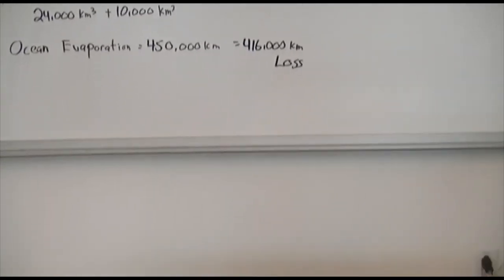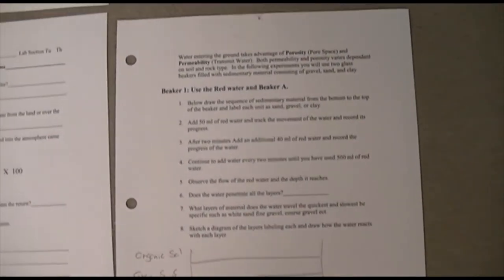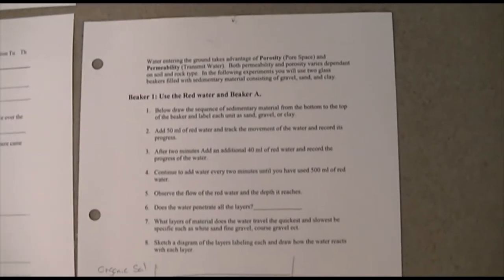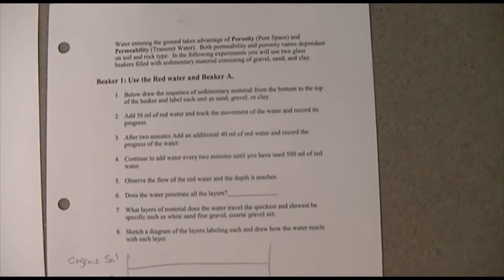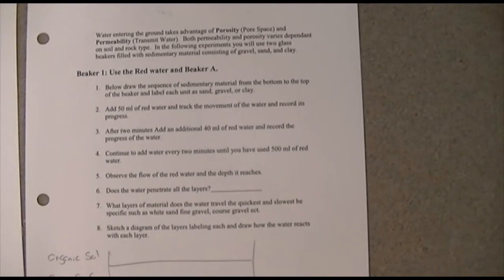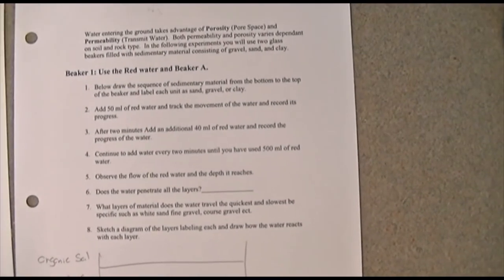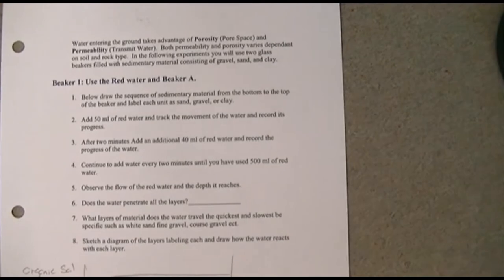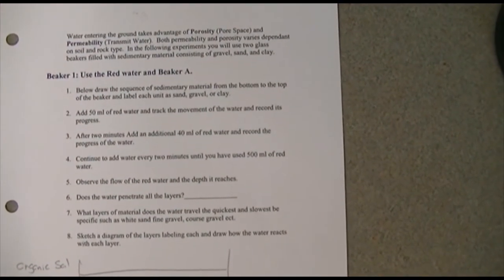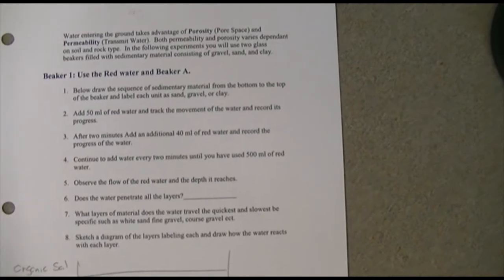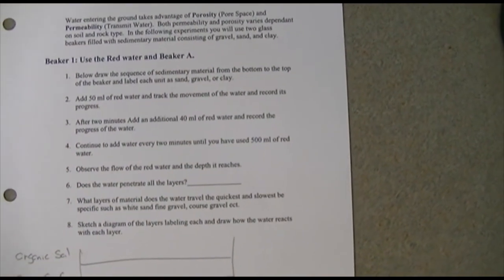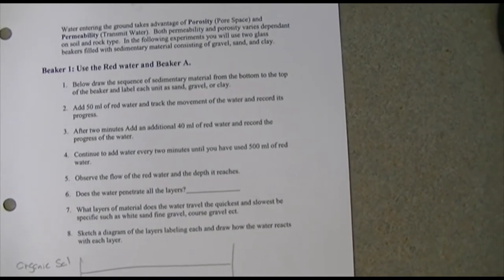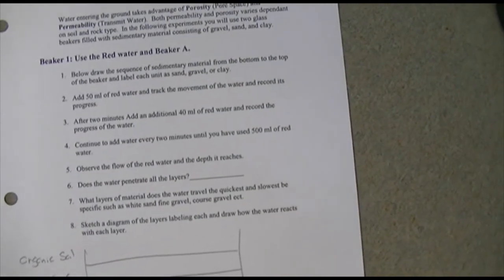The next part of this lab deals with groundwater, specifically two important concepts: permeability and porosity. Water entering the ground takes advantage of porosity — pore space — which allows water to be absorbed. Permeability is the ability of rock, soil, or geological units to transmit water, meaning allowing water to flow through it. Both permeability and porosity vary depending on the soil and rock types.